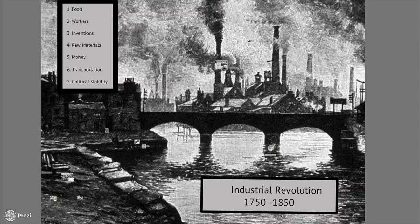So the Industrial Revolution begins in England at about 1750 and goes for about 100 years. And there's a few reasons why it begins in England, and we're going to go through each one.